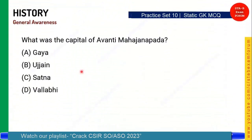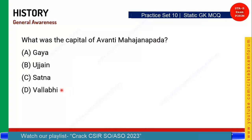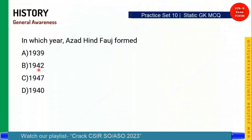What was the capital of Avanti Mahajanapada? Students, you should know all the Mahajanapadas and their capitals. Time starts now. It is a very popular place where Kumbh Mela is organized. The correct answer is Option B — Ujjain. Ujjain was the capital of Avanti Mahajanapada.